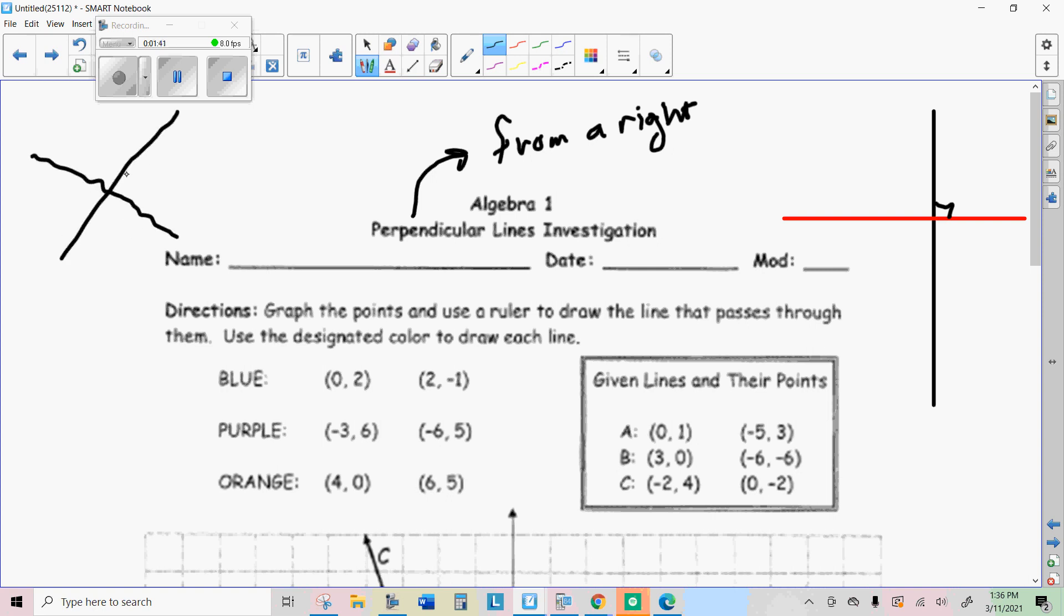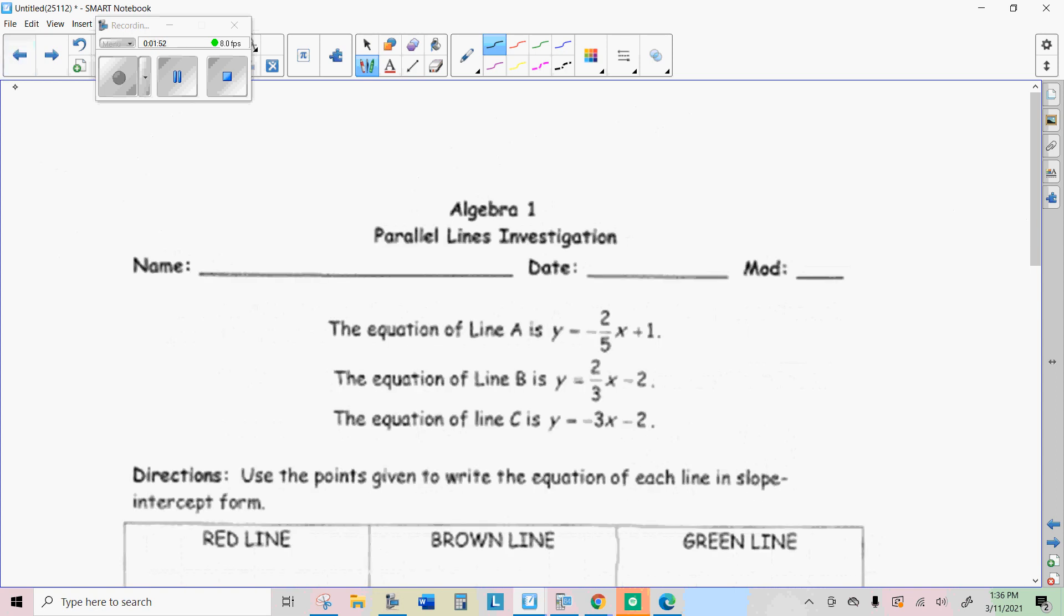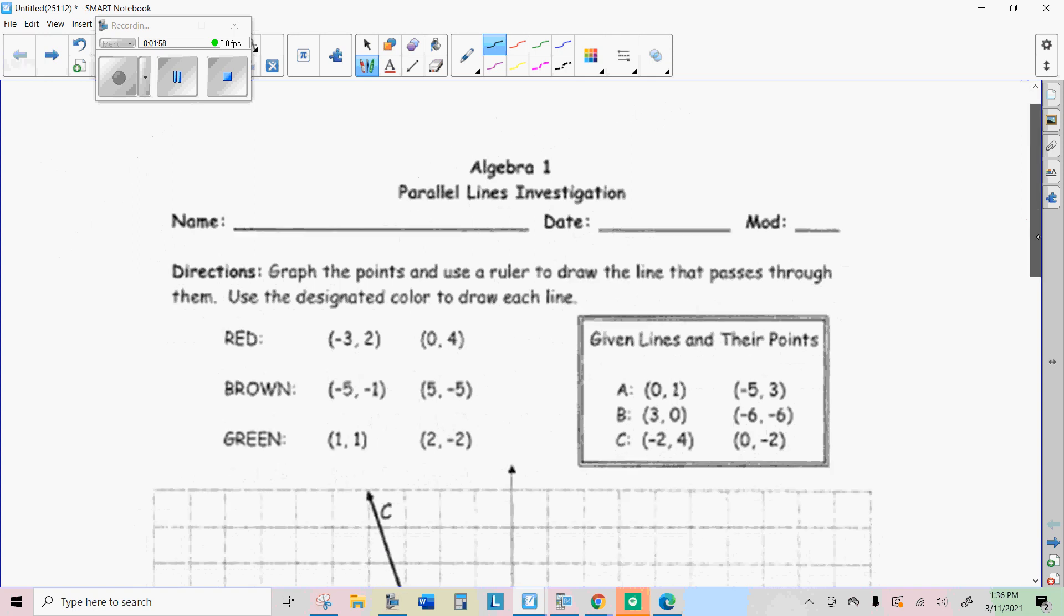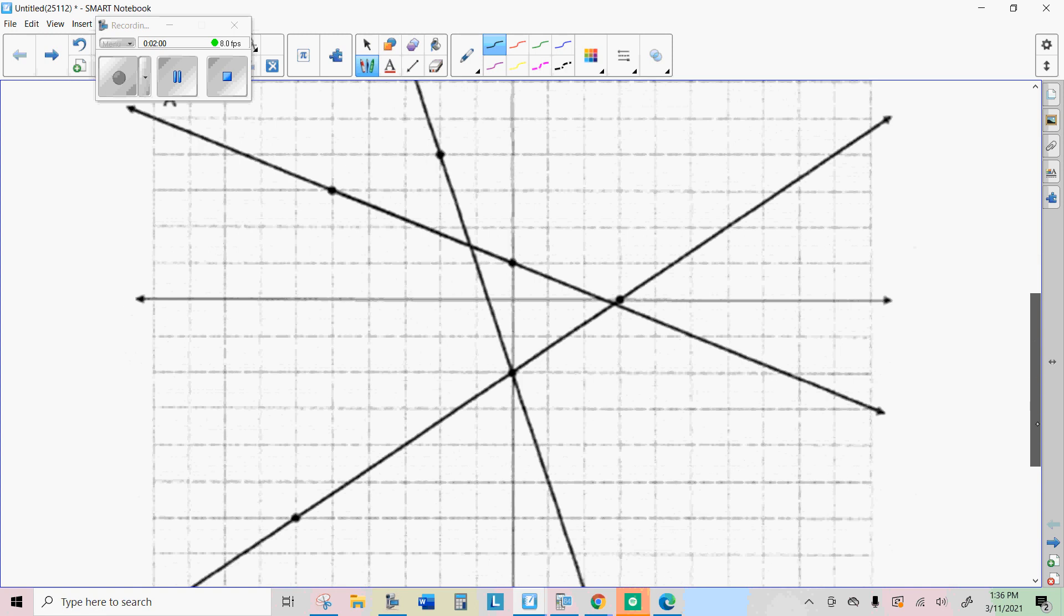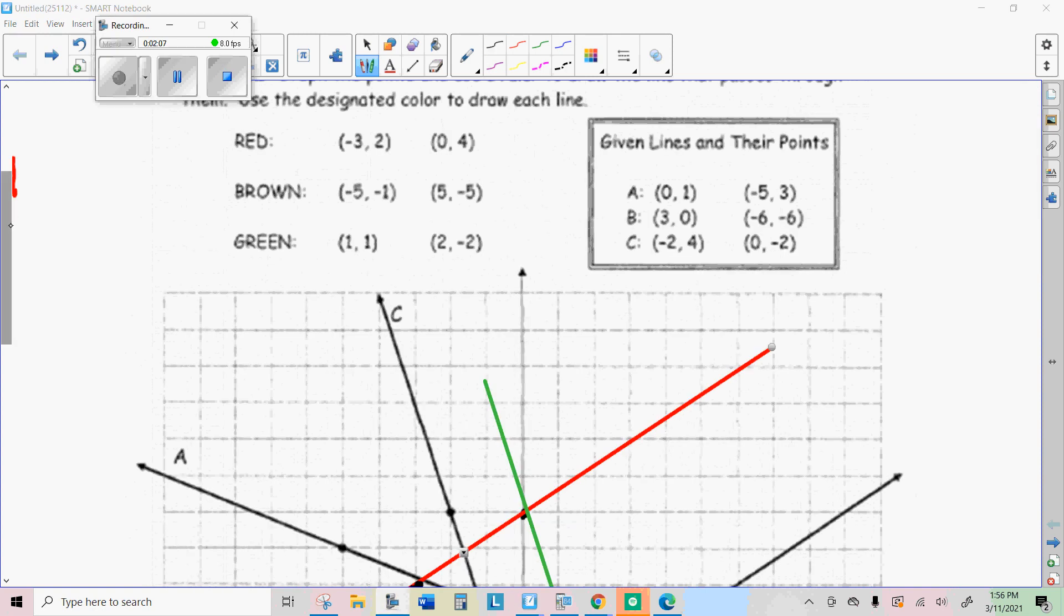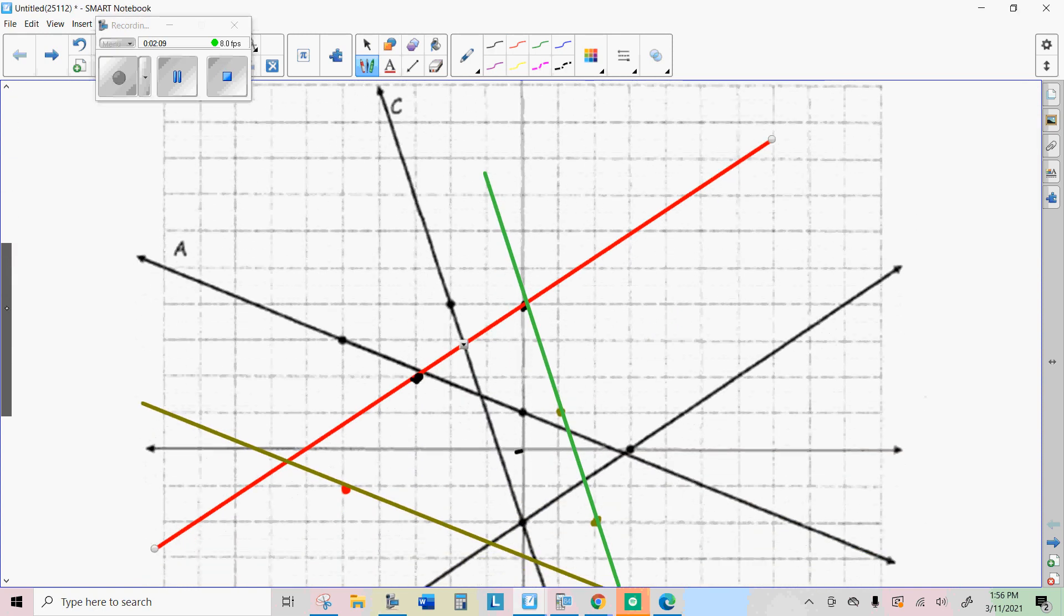What you're going to discover from this investigation is that when they're perpendicular, something happens with their slope, and when they're parallel, something happens with their slope. So go ahead and draw these according to the directions and then answer the questions on the next page. I'll show you the answers just in case you might have done something wrong.